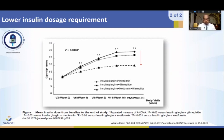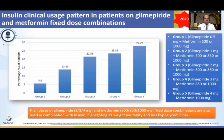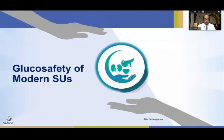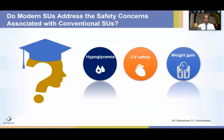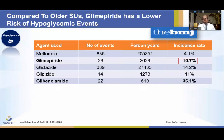HbA1c less than 7.5 was seen in 43% with insulin glargine plus metformin, 56% with insulin glargine plus glimipride, and 75% when all three agents are combined. This also shows that when glimipride is added, the required dosage of insulin is reduced. Glimipride and metformin have been used in different combinations, starting from 0.5 mg glimipride with 1000 mg metformin up to 4 mg glimipride with 1000 mg metformin.